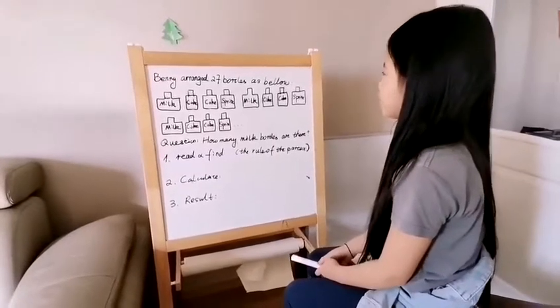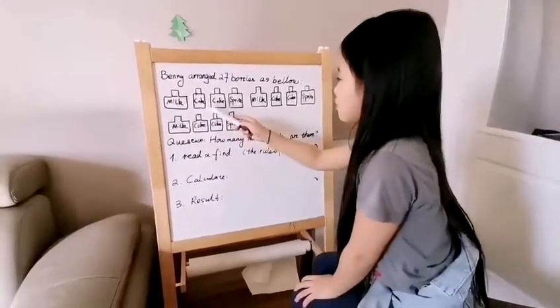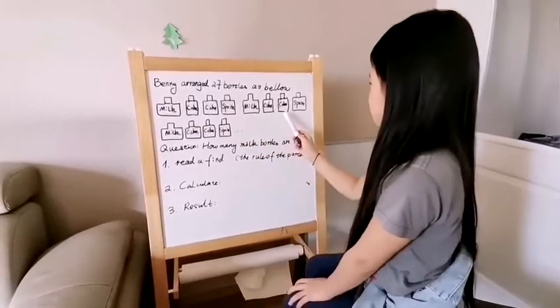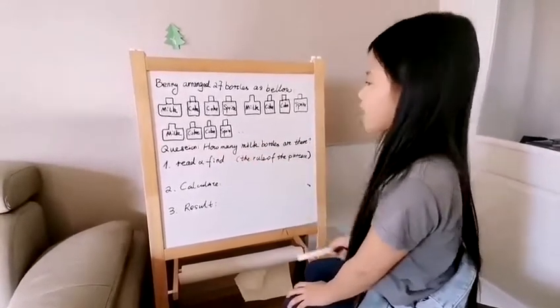Penny arranged 27 bottles as below. Milk, Coke, Coke, Sprite. Milk, Coke, Coke, Sprite. Milk, Coke, Coke, Sprite.